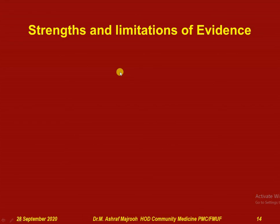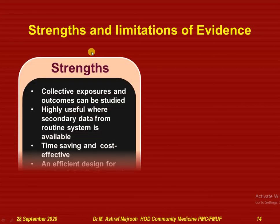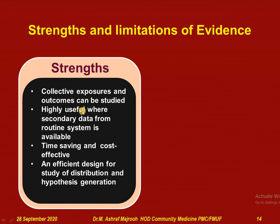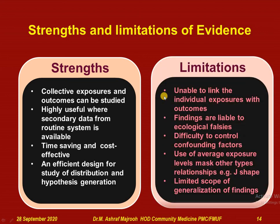Strengths and limitations of evidence generated through ecological studies: Strengths include that collective exposure and outcome can be studied, highly useful where secondary data from routine systems is available, time saving and cost effective, and an efficient design for study of distribution and hypothesis generation. Limitations include: unable to link individual exposure with outcomes, findings are liable to ecological fallacies, difficult to control confounding factors, use of average exposure levels masks other types of relationships like J-shaped relationships, and limited scope for generalization of findings, which may need other analytic studies for generalization.